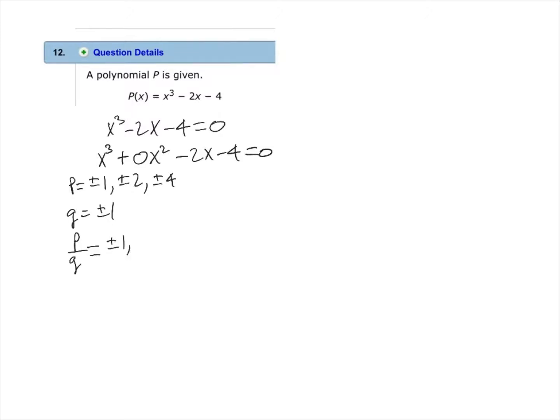And this would be plus or minus 1, plus or minus 2, plus or minus 4. So we will choose one of these factors and perform a synthetic division. So we will try negative 2 to begin.